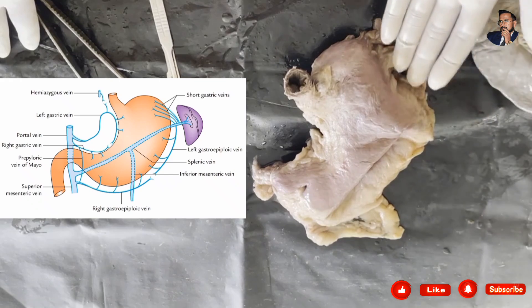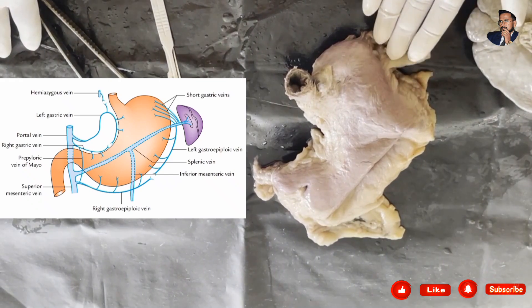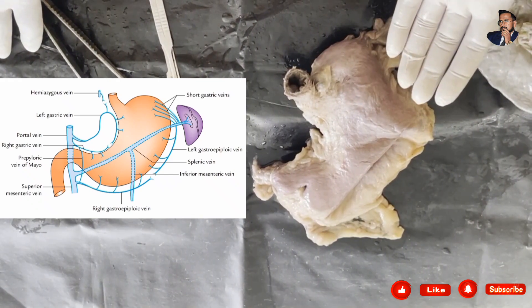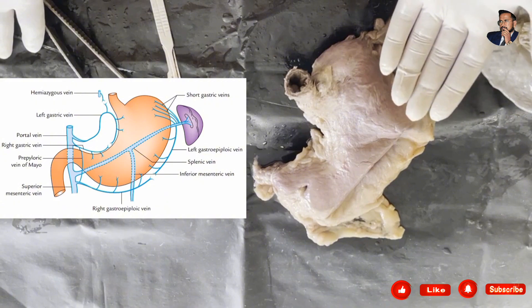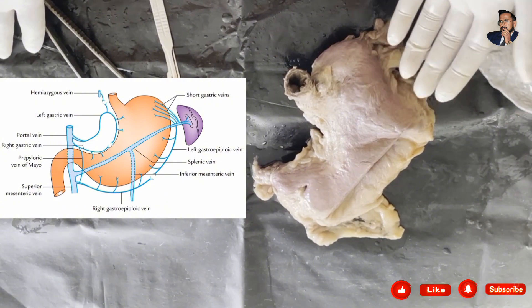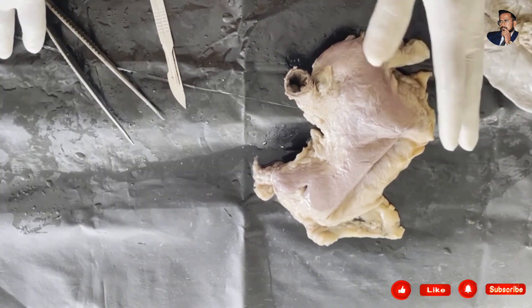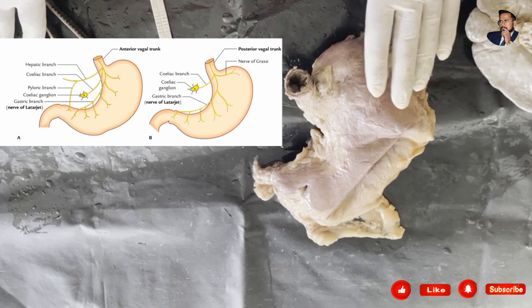Venous drainage is by the short gastric vein, right and left gastroepiploic veins, left gastric vein, and the right gastric vein. All these veins drain into the portal vein, except the right gastroepiploic vein, which drains into the superior mesenteric vein.